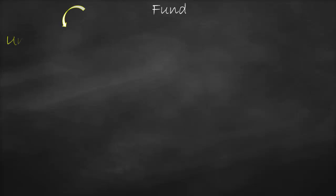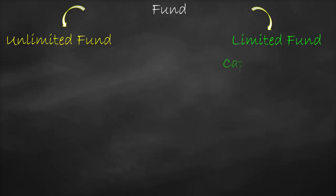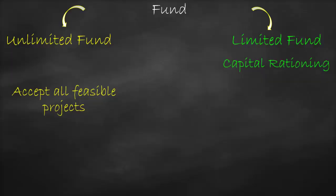When we talk about funding any project, we have two types of funds: either unlimited fund or limited fund, which we call capital rationing. Unlimited fund means we have funds available for any profitable project, therefore we will accept all feasible and profitable projects because we have excess funds that can cover all profitable projects.